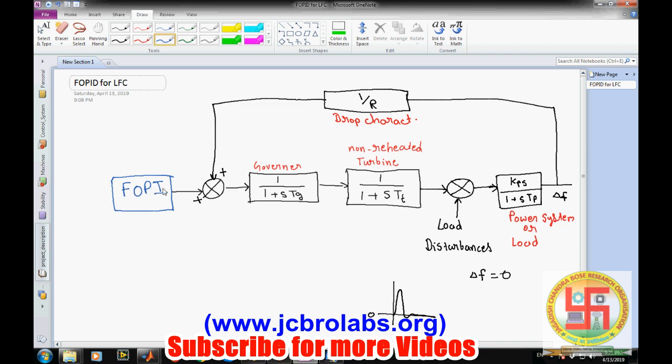Fractional order PID controller will be there. The input of this fractional order PID controller would be the output after drop characteristics. This is the delta f after drop characteristics, and this could be the set point. As we know, the set point in this case will remain zero because we want to eliminate disturbances.